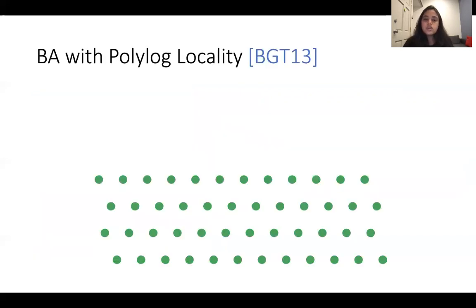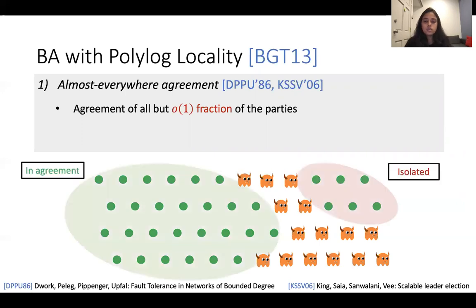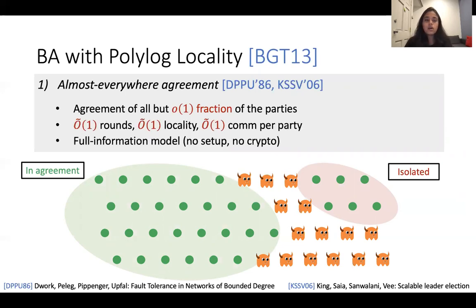The BGT protocol proceeds in three main steps. The first step is where the parties reach almost-everywhere agreement — a significant fraction of honest parties reach agreement, but corrupt parties can keep some honest parties isolated. This step requires polylogged rounds, locality, and per-party communication, and does not require any setup or cryptographic assumptions.